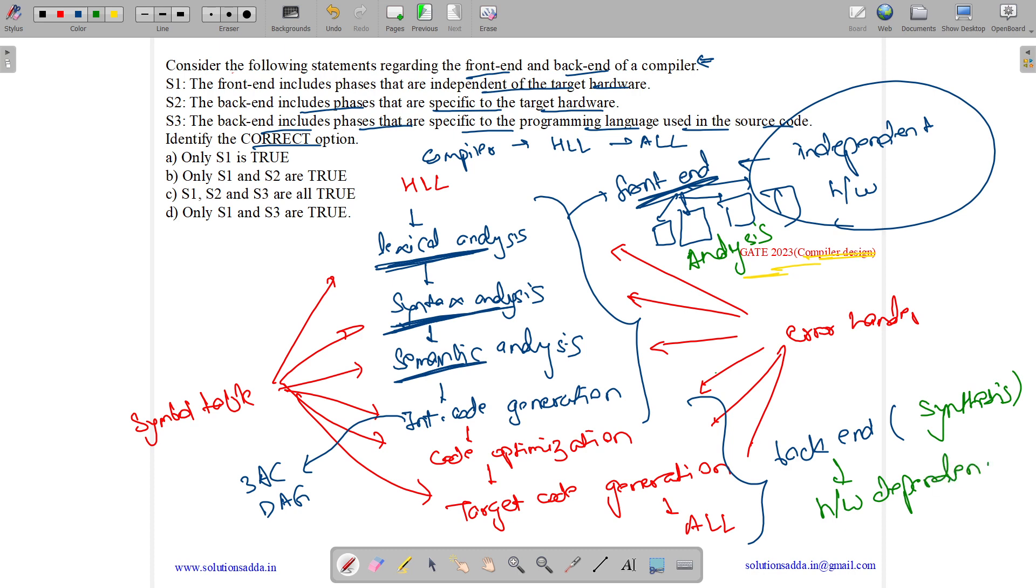Let's look at all these statements. Because there are some code optimization statements that depend on the hardware, and this target code generation is entirely hardware-dependent. Like what are the instructions given to us? Like MOV, MCB, certain instructions depend on the hardware.